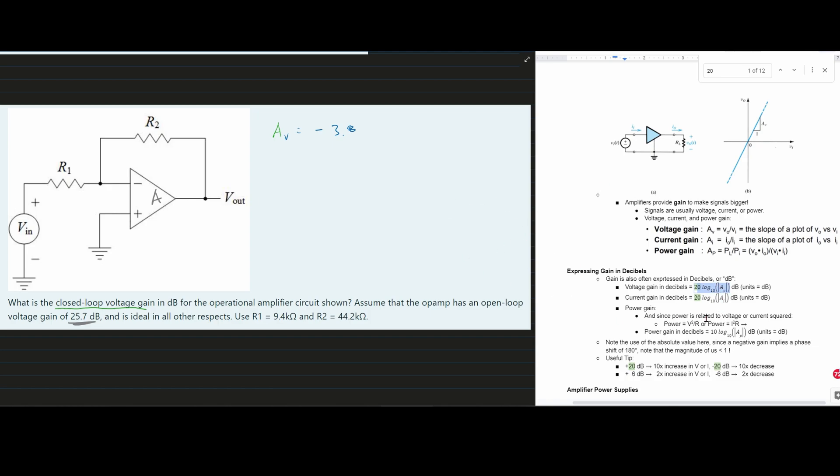So if we have a graphing calculator, it's going to be 20 log base 10. And then we're going to have not negative 3.8 because we have absolute values in here. Note the absolute values. That's very important. Otherwise, our log won't work. So we have 20 log base 10 of absolute value of negative 3.8. And that is going to give us approximately 11.7.